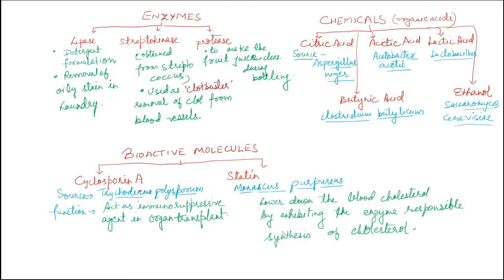Bioactive molecules include cyclosporin A and statin. The source of cyclosporin A is Trichoderma polysporum, and its function is to act as an immunosuppressive agent — during organ transplantation, cyclosporin A helps the process by suppressing immune rejection. Statin, sourced from Monascus purpureus, helps in lowering blood cholesterol by inhibiting the enzyme responsible for cholesterol synthesis.